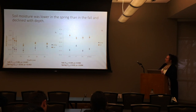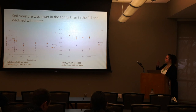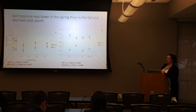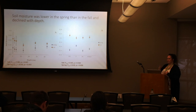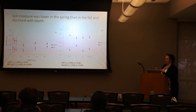In the spring, the fallow plots actually had greater soil moisture than our cover crop plots, which makes sense because they have lower coverage overall — those plants aren't there to use that moisture.